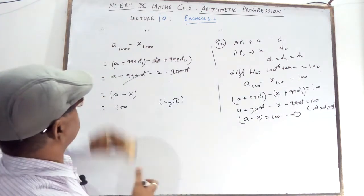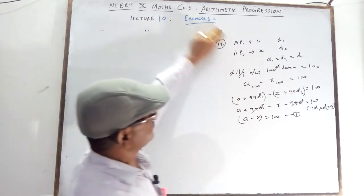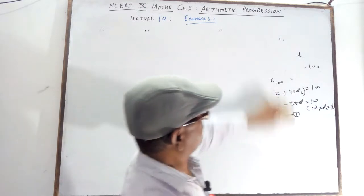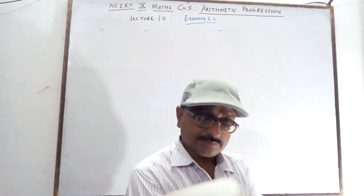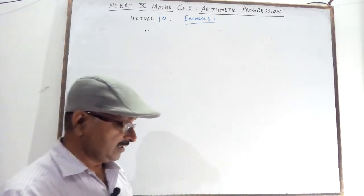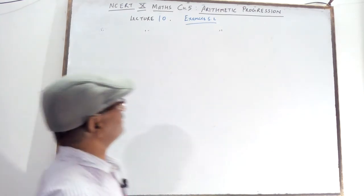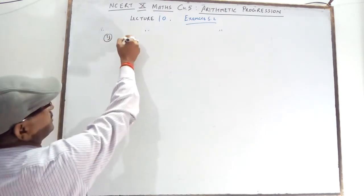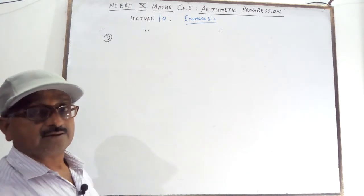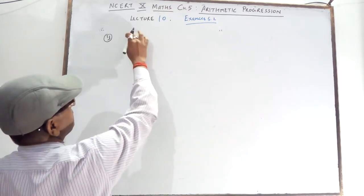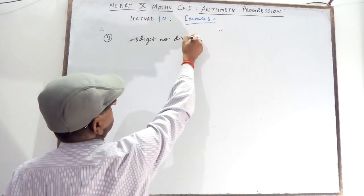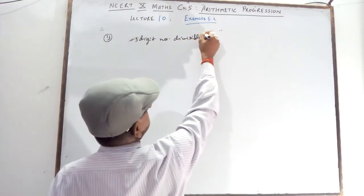Question number 13: How many 3-digit numbers are divisible by 7? First, 3-digit numbers start from 100.